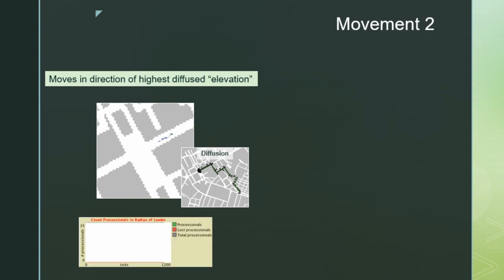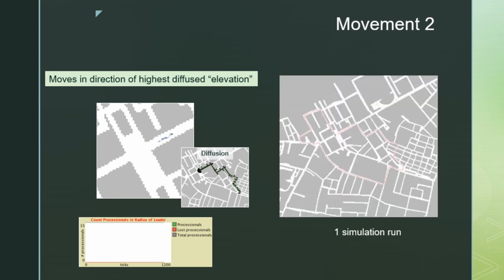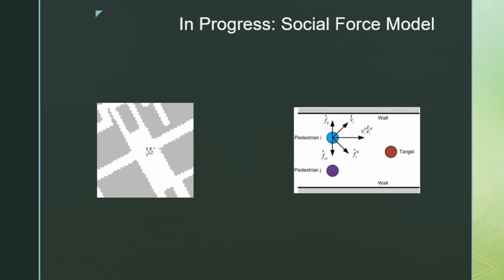This works almost too well — there's no variation in where the processional followers go; they all follow almost the exact same route as the leader. One simulation run looks good, but over 20 runs they're following the exact same path, which makes it very difficult to study crowd dynamics. I doubt any procession crowd movement is going to be going single file down a street, especially on an empty street. This shows the diffusion approach of creating targets along street networks is promising, but finding the correct movement algorithms remains the challenge.